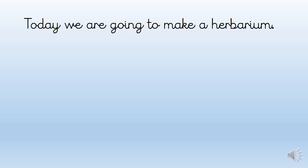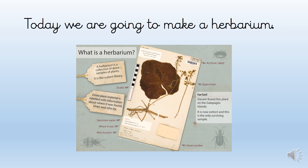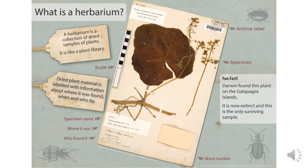Now a herbarium — let's just remind ourselves what that is. We looked at it yesterday in the PowerPoint, so have a look at this slide. It's a record of a plant, and you can see this is one that Darwin collected from the Galapagos Islands. It's really important because the plant is actually now extinct.